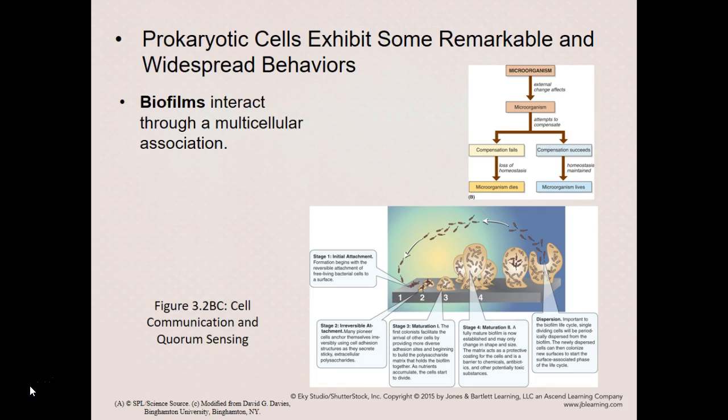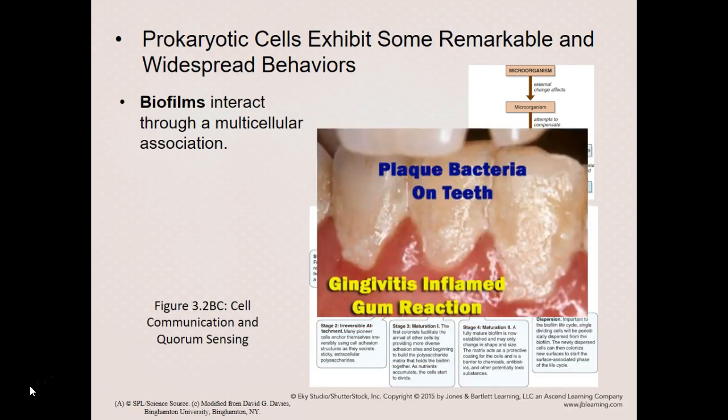One biofilm that everybody has to deal with is plaque. Plaque is a biofilm that forms on teeth, and it forms immediately after you finish brushing. We brush our teeth every night before bed and every morning, but as soon as we stop brushing, bacteria start aggregating on our teeth again. The only way to get rid of a biofilm is to mechanically remove it — brushing our teeth twice daily helps remove the plaque so we don't have a large buildup.